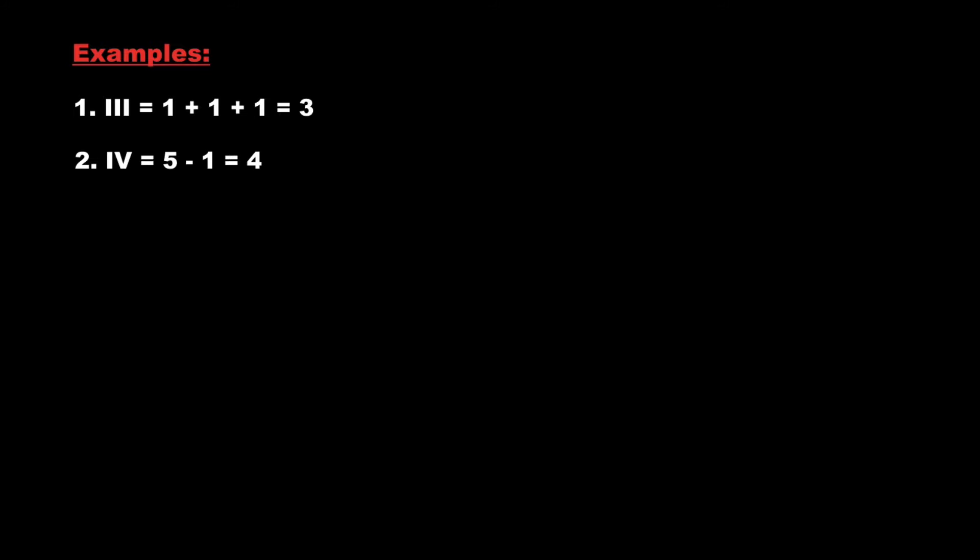So if we have a smaller symbol to the left side then we subtract that value from the right symbol, and if we have the smaller symbol to the right side then we add the value. As in the case of XII, the small symbol I is to the right side of X, therefore we add 10 to 2 which is 12.